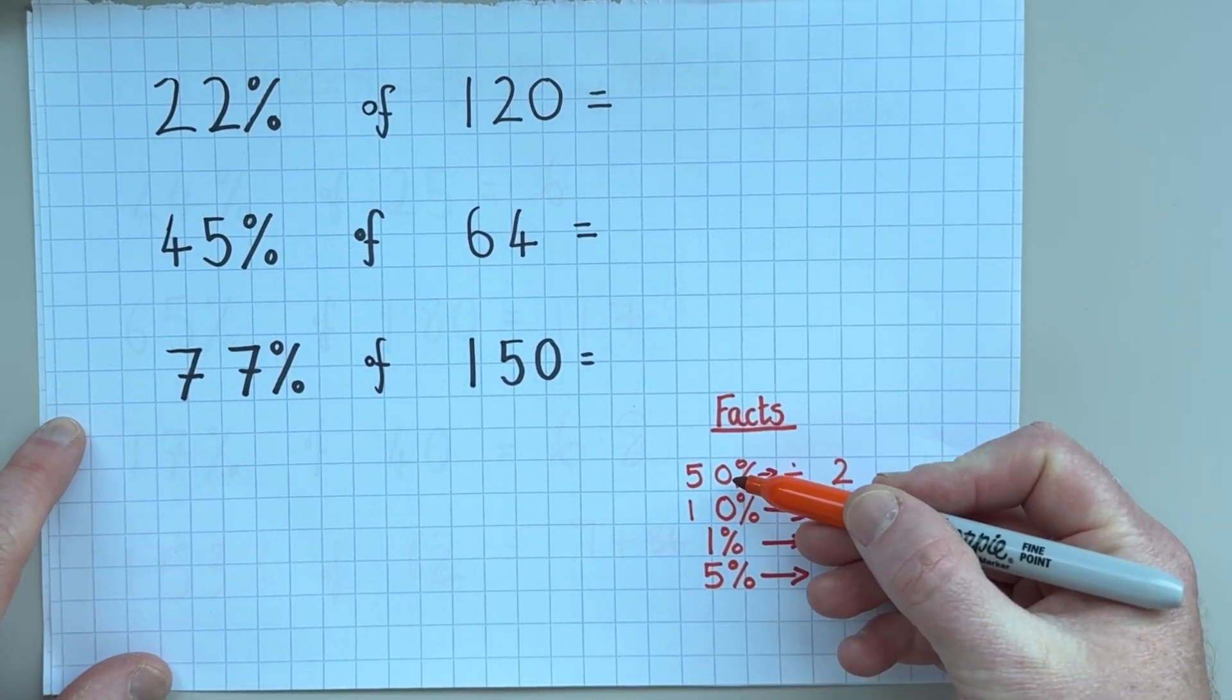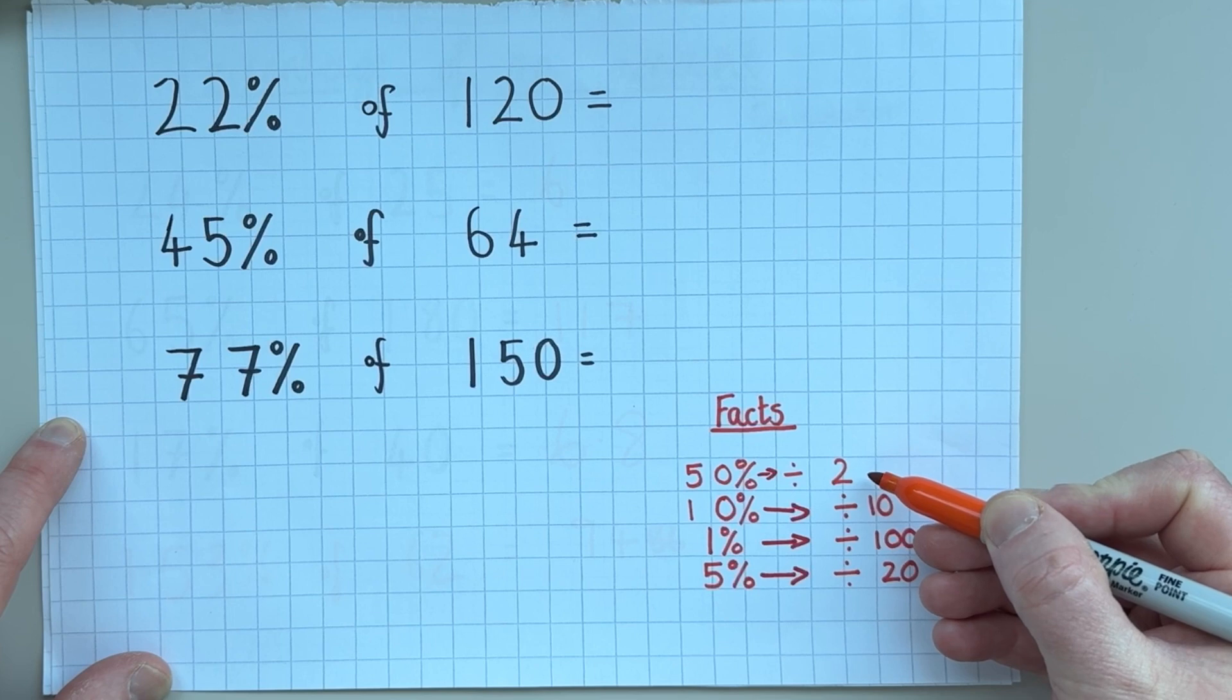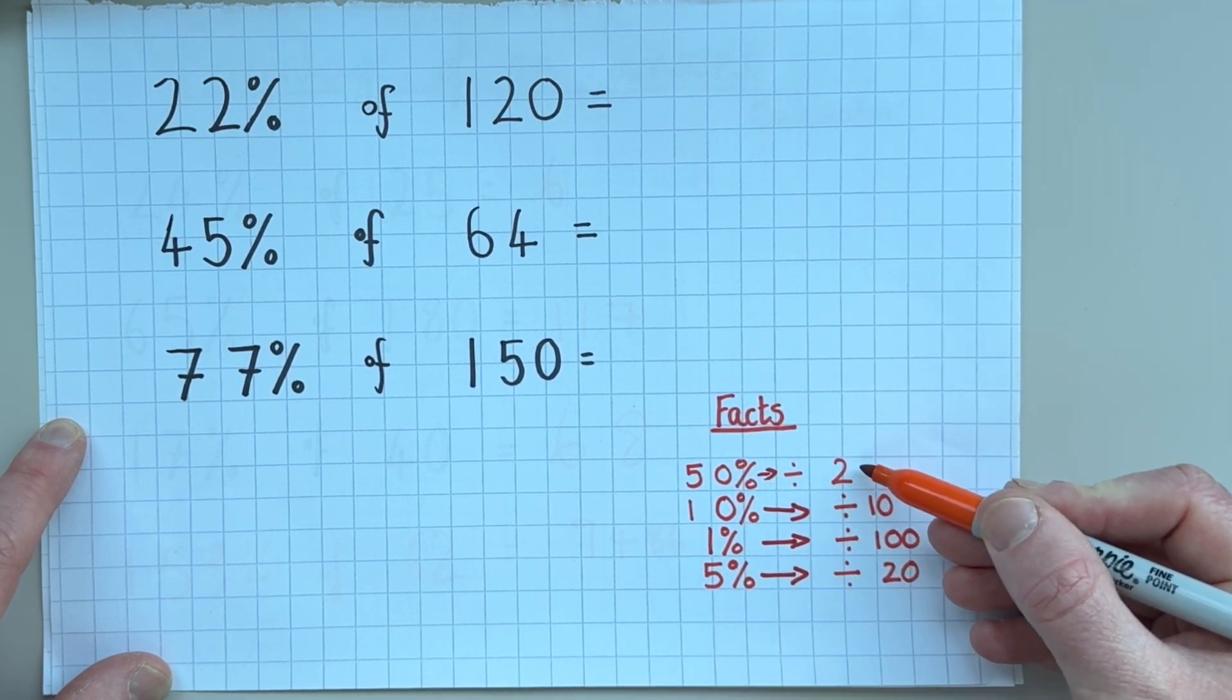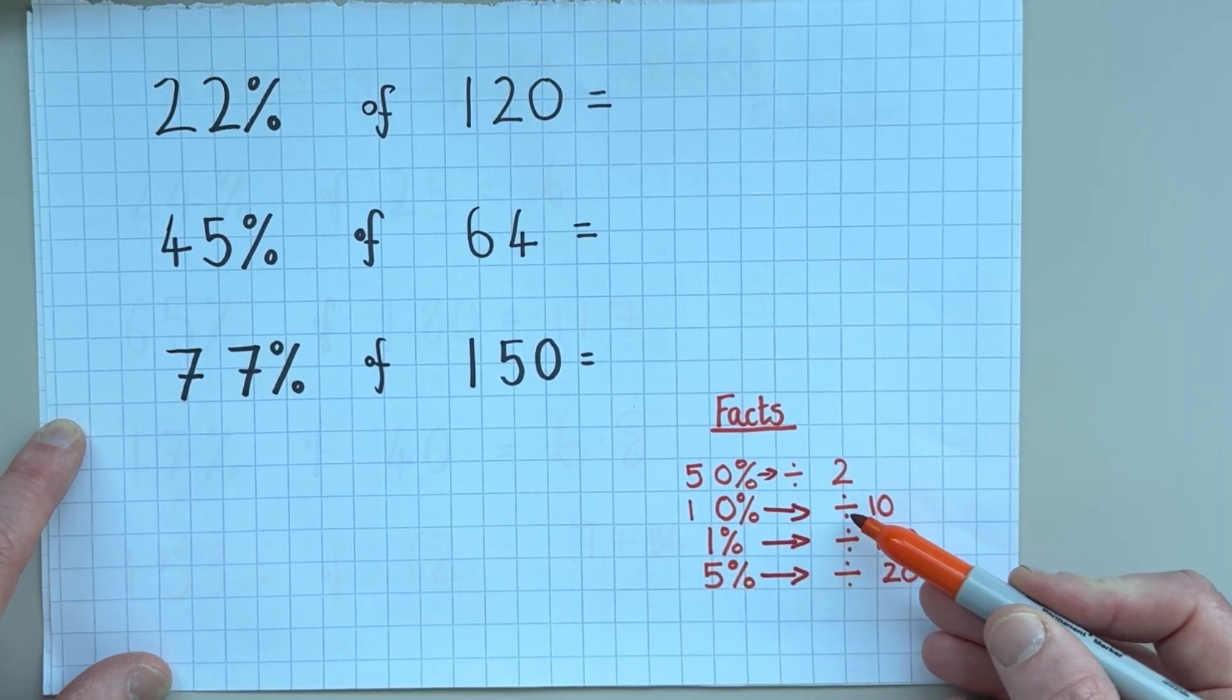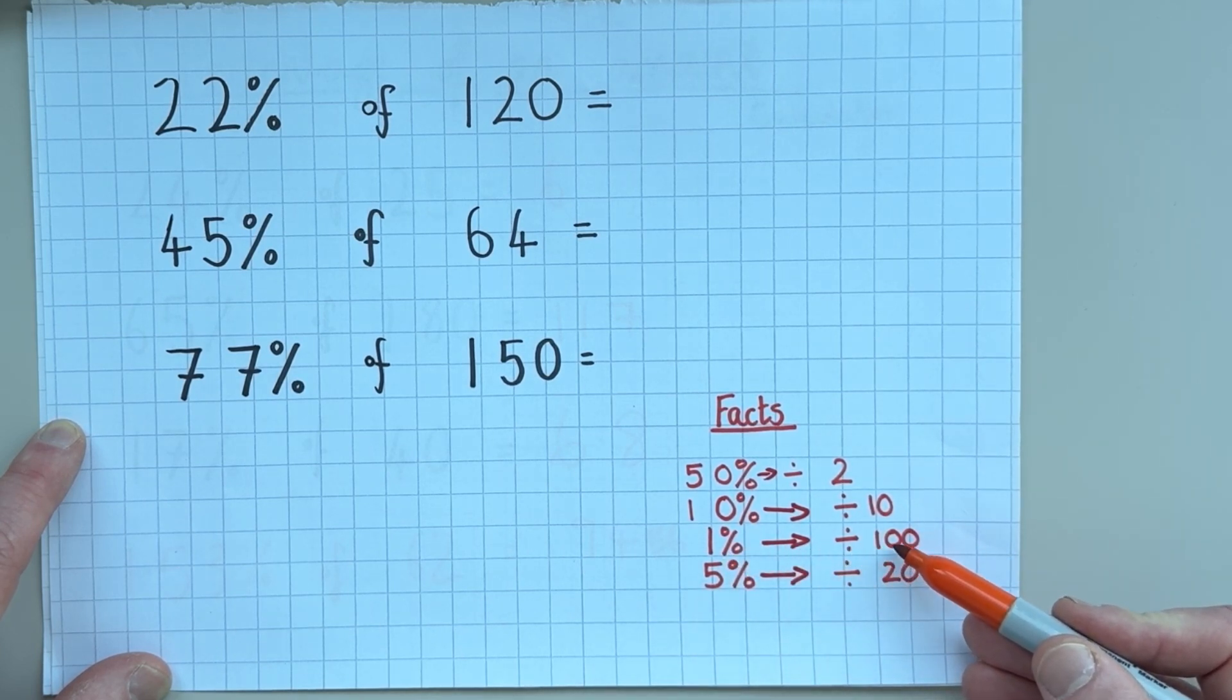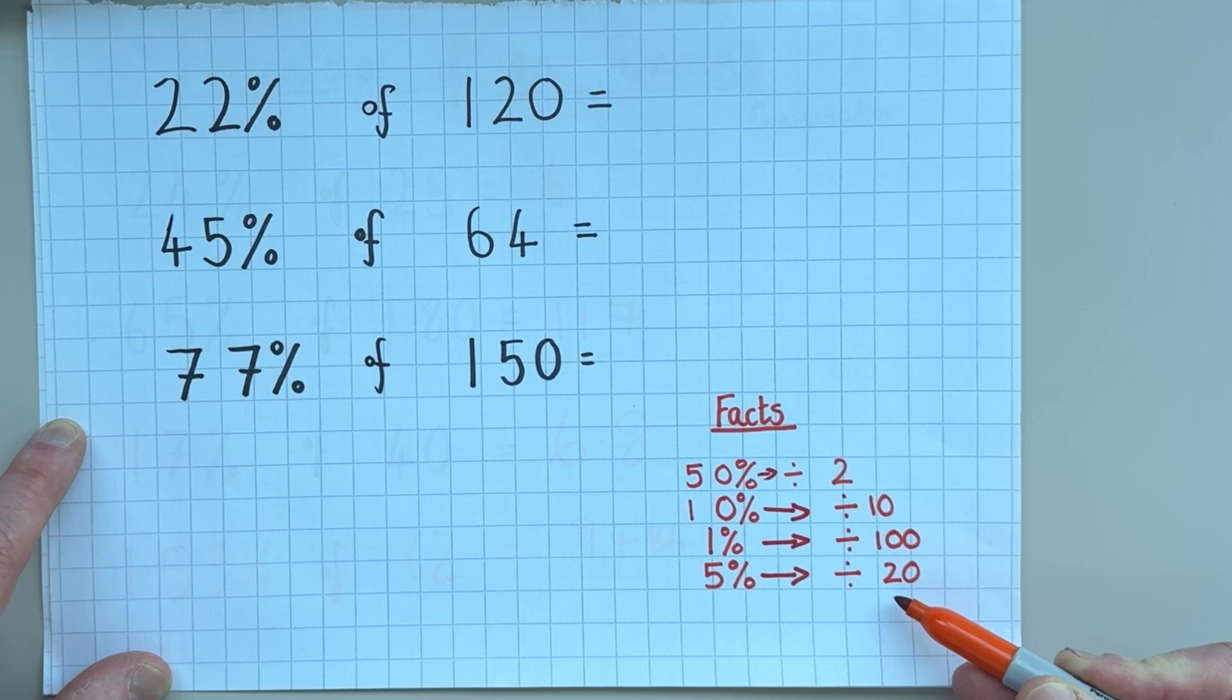So before I get into the questions we need to know some facts for percentages. So 50% is the same as half and half is the same as dividing by 2. So if I quickly want to work out 50% of a number all I have to do is half it. Now if I want to work out 10% of a number then I must divide it by 10. And if I want to work out 1% of a number then I must divide it by 100. Now with 5% we divide it by 20 which isn't so easy to do mentally but I'll show you how we can do that.